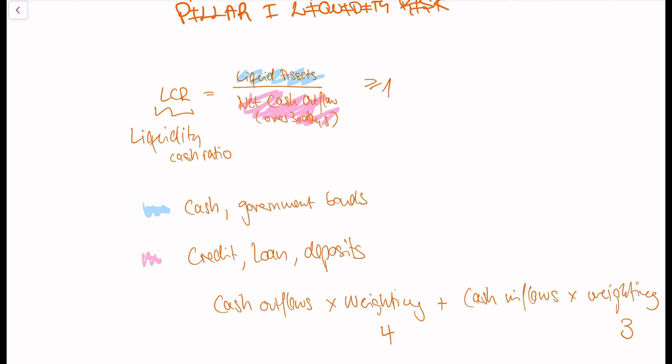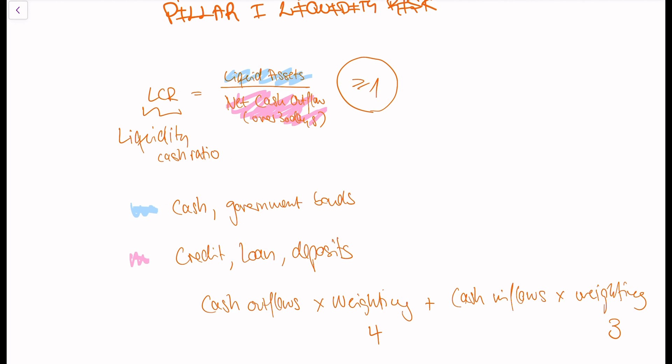With the Liquidity Coverage Ratio, the weighting factor for outflows is higher than for inflows — the weighting factor for outflows is 4 and for inflows is 3. A bank has to calculate this ratio and ensure that it's larger than 1. By weighting outflows more than inflows, we ensure the bank is conservative, so that if something happens to the inflows, the bank can still meet its obligations. Another ratio is the Net Stable Funding Ratio, NSFR.